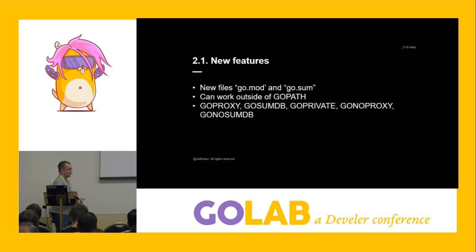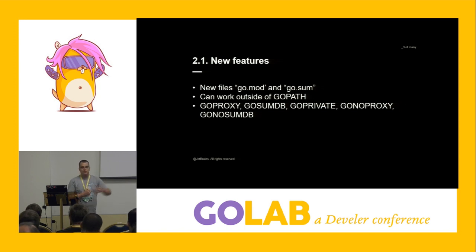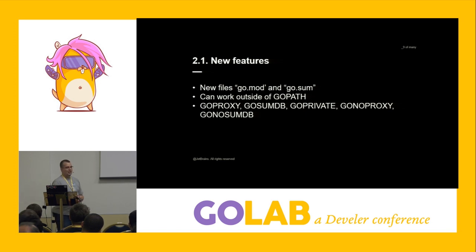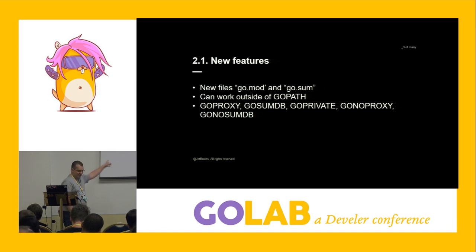GoPrivate comes in in 1.13 to handle private dependencies. For example, if you want to retrieve a private package from GitHub and you have GoProxy set to proxy.golang.org, it will give you an error because the private package can't be indexed by that proxy. That's where GoPrivate comes in and says: in this case, go and fetch it directly — ignore the proxy setting. GoNoProxy also helps you not proxy certain packages.